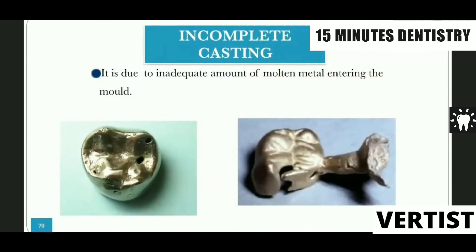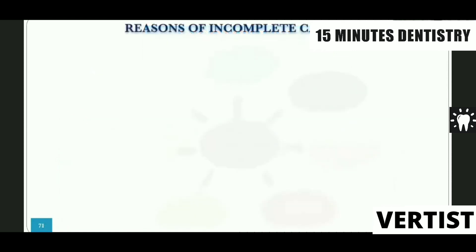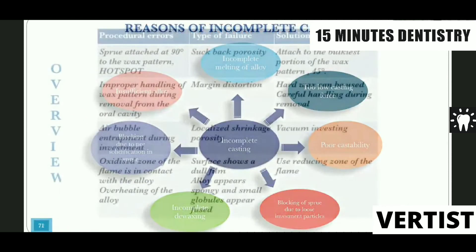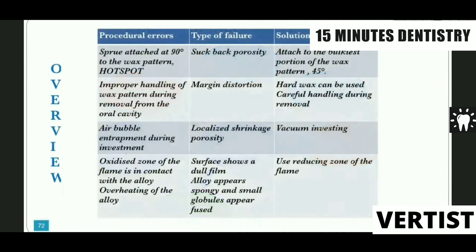Incomplete casting occurs whenever there is an inadequate amount of molten metal entering into the mold. A summary table is provided showing procedural errors, types of failures, and solutions — this table is very important and could be asked as an exam question. These are the same points discussed throughout this section.